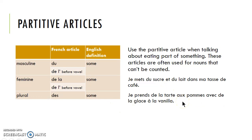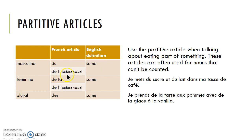Je prends de la tarte aux pommes avec la glace à la vanille — I have some apple pie with some vanilla ice cream. So de la means 'some' because we have feminine nouns here. You don't know whether I'm having a tiny little piece of pie or a great big piece with a huge scoop of ice cream. Du is our masculine form, de la feminine. We use de l'apostrophe before vowel sounds regardless of gender, and de to mean 'some' with a plural noun.